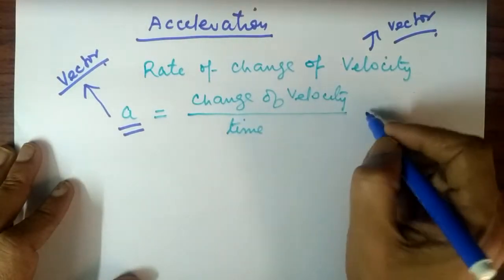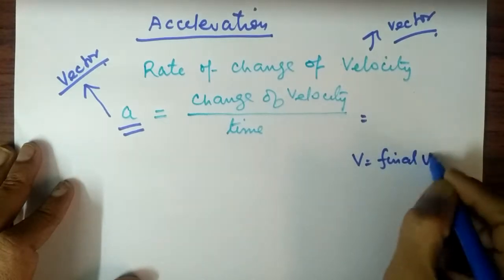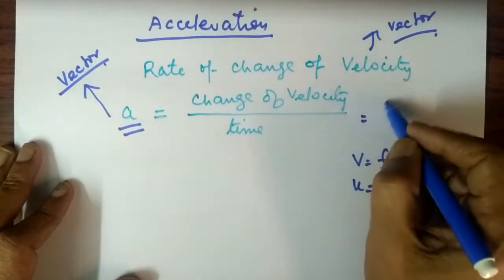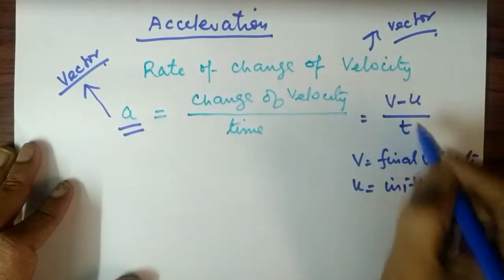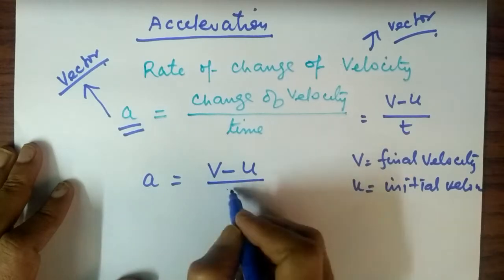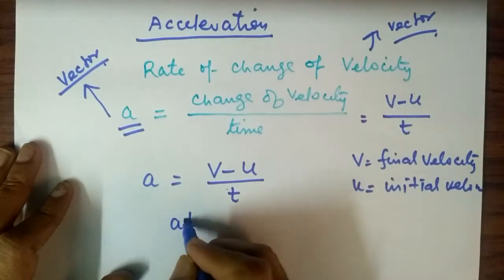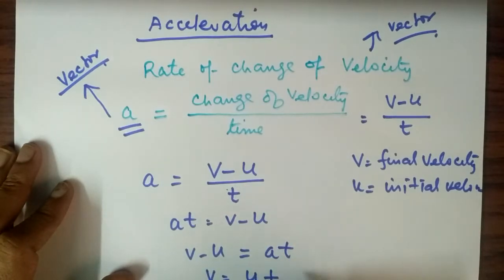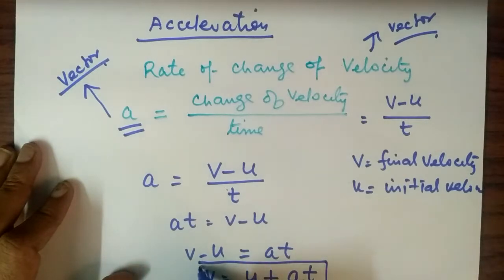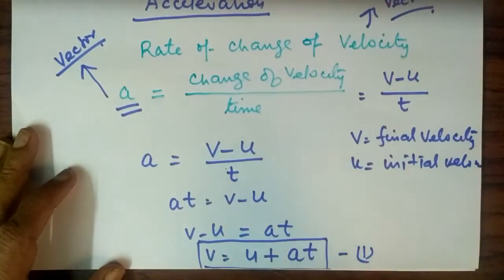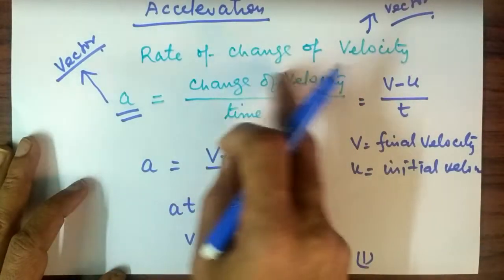So, A equals change of velocity. Let V be the final velocity and U be the initial velocity. Then change of velocity is V minus U, and time is T. So we get A = (V − U) / T, which gives AT = V − U, and therefore V = U + AT. This is the first equation of motion.